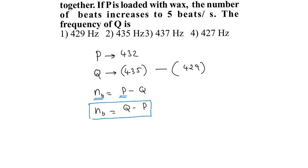Our equation should be: beat frequency, which is 3 in the first stage, is equal to Q minus P. The frequency of P is given as 432. So the value of Q should be equal to 435 Hz.